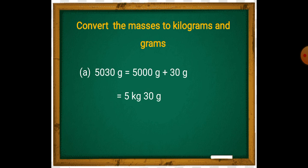Convert the masses to kilograms and grams. First question: 5,030 grams. We can rewrite 5,030 grams as 5,000 grams plus 30 grams.